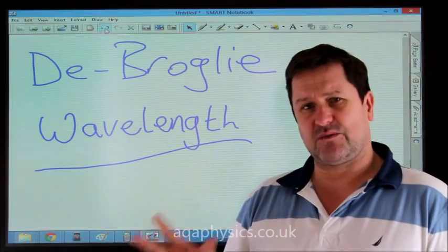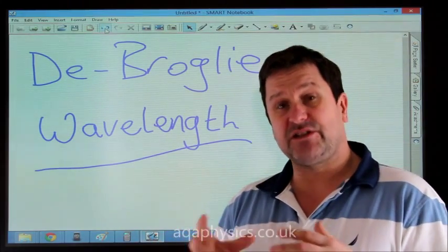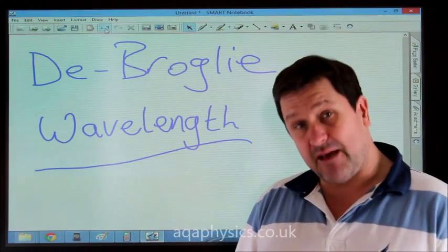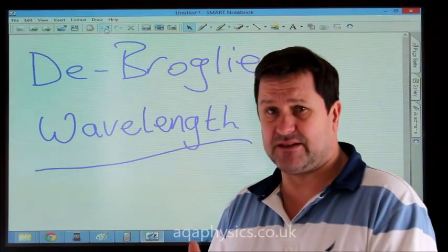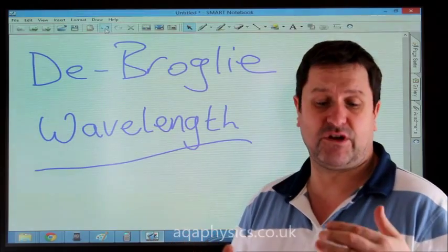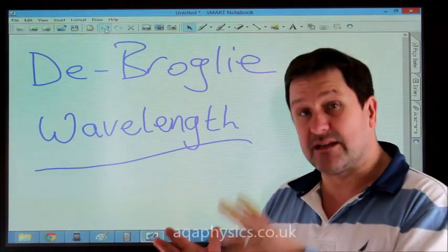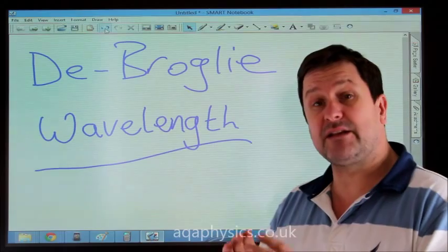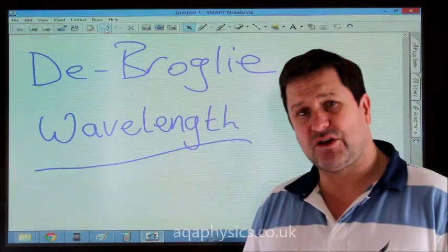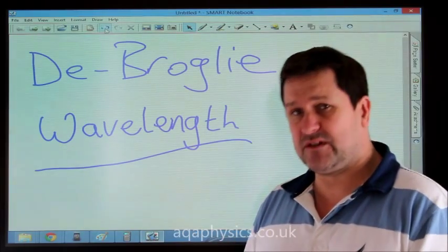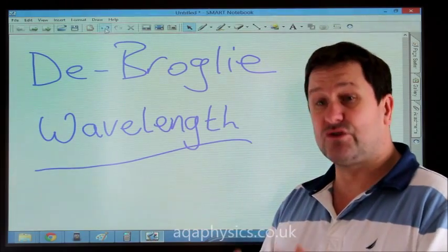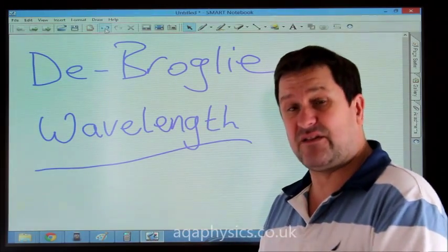Now what de Broglie realized was, when we did diffraction gratings in school, we did electron diffraction. What we did was we fired a beam of electrons through graphite, and the graphite acted as a grating for our electrons. What we got were rings on a green fluorescent screen. And what that showed us was that the electrons could produce an interference pattern and therefore the electrons were travelling as waves, and they were constructively and destructively interfering with each other.